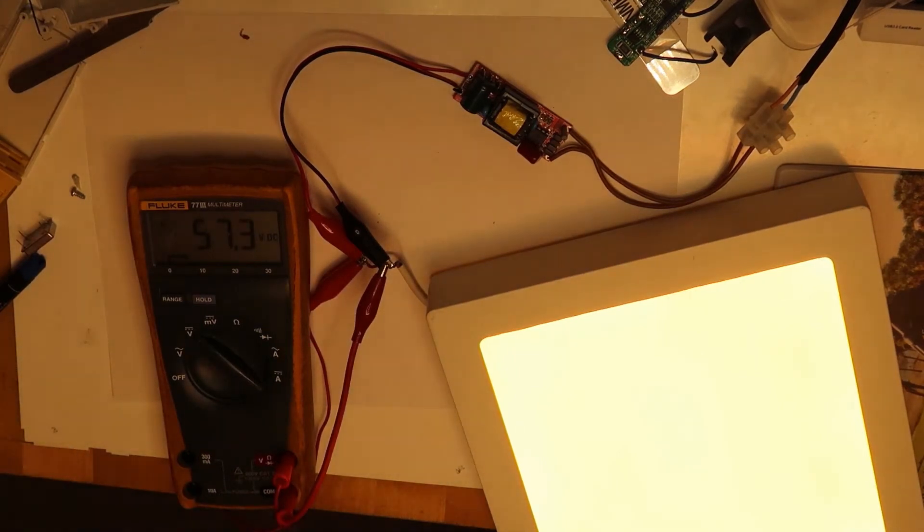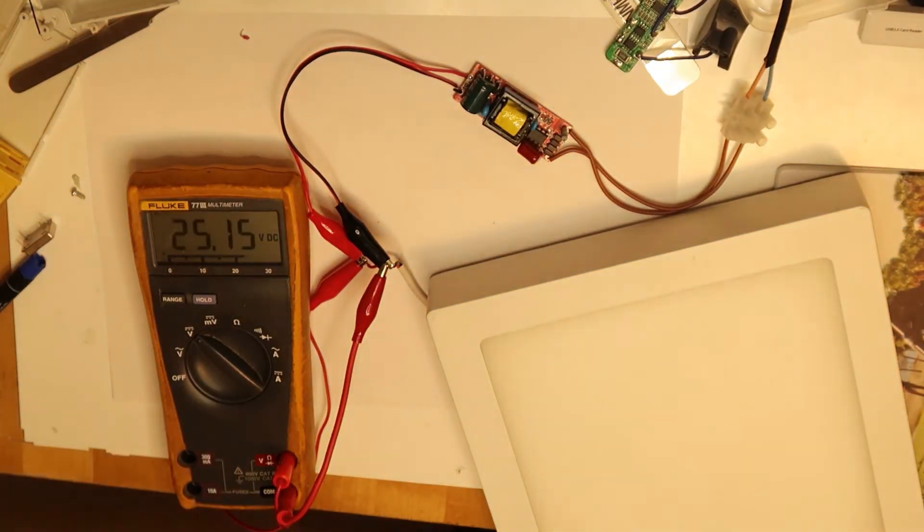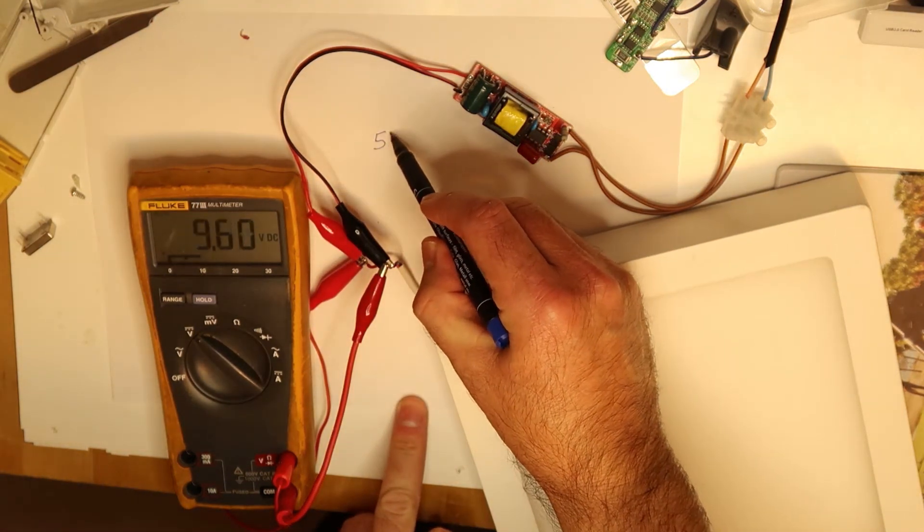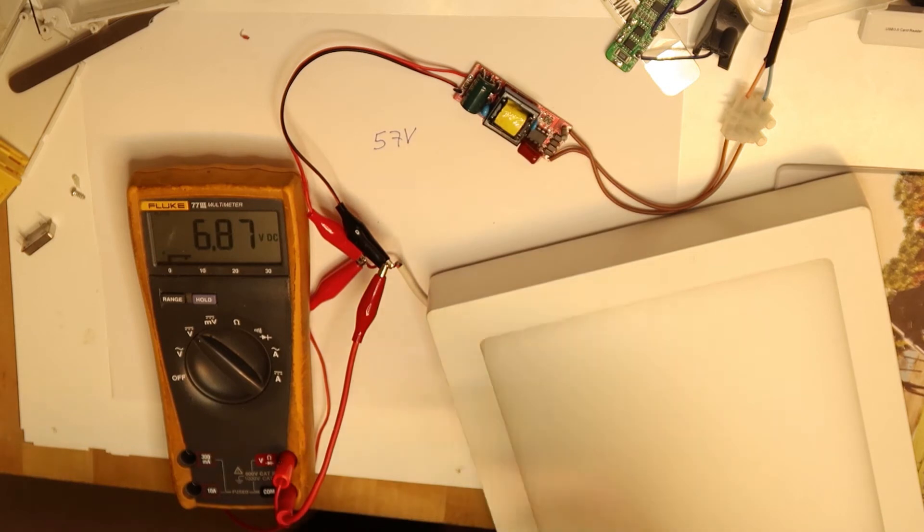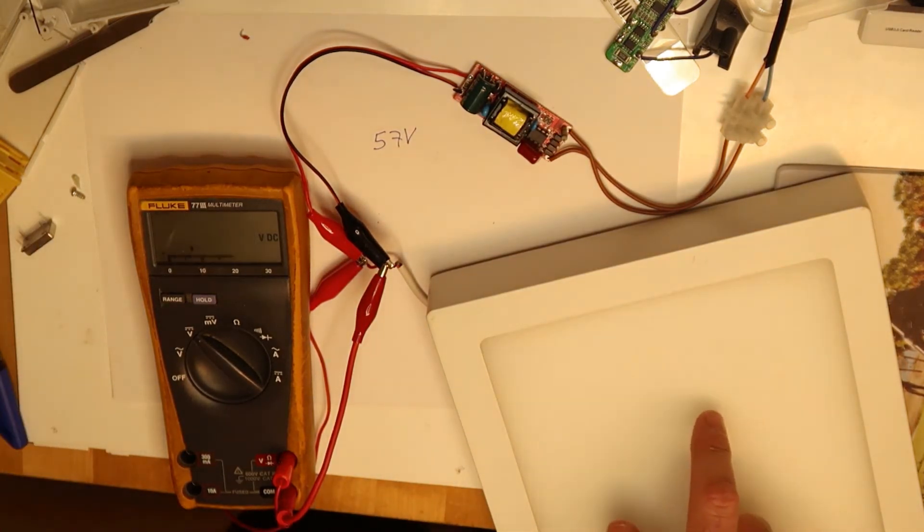We can see the voltage is 55 volts. 55 volts. So the voltage that we will need from our DC-to-DC adapter is 57, sorry, 57 volts not 55. So we know that it is 57 volts and we'll write it.